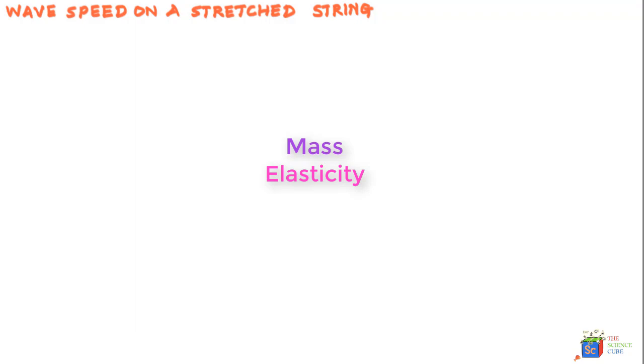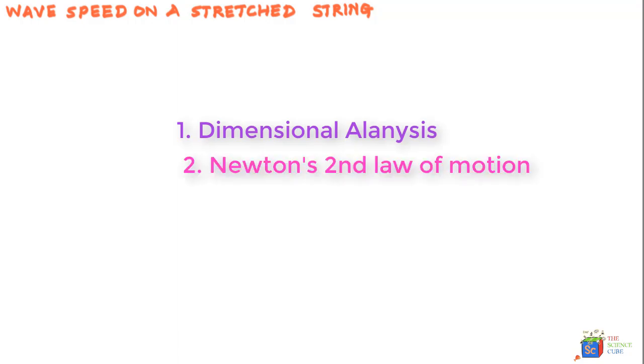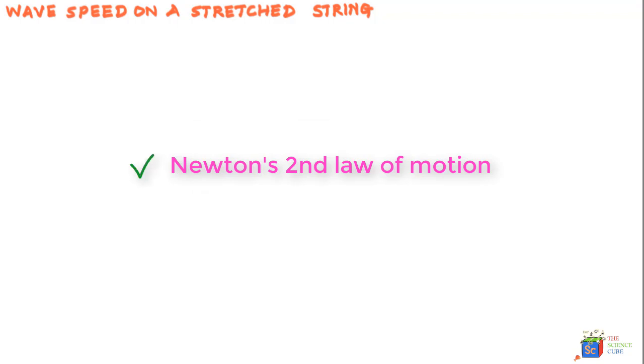There are several ways of finding the magnitude of this dependency on mass and elasticity: dimensional analysis, using Newton's second law of motion, or using impulse momentum method. I felt that Newton's second law of motion is the most convenient way of deriving the velocity of the wave in a straight string.